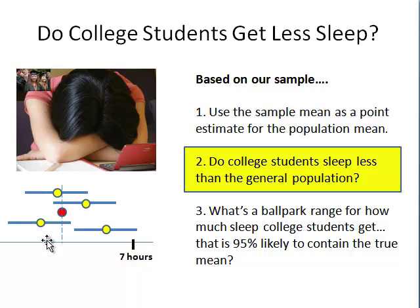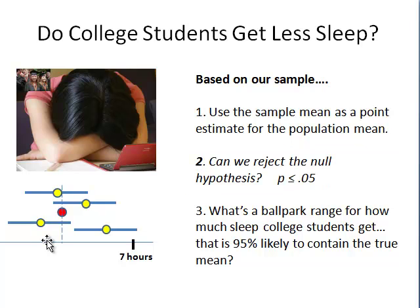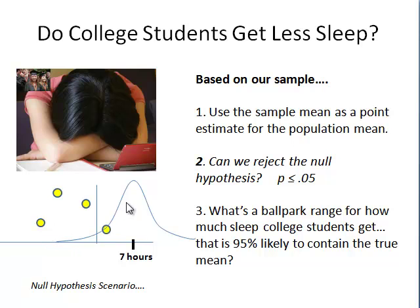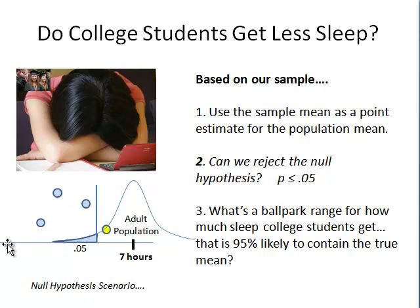Second, do college students sleep less than the general population? We're going to focus specifically on whether we can reject our null hypothesis. The null hypothesis is that college students are just like everybody else, needing seven hours or perhaps even more of sleep. We're looking at a distribution for the amount of sleep required by the adult population in the U.S., centered on seven hours. Looking at the left tail, because we're doing a one-tail hypothesis test, we can see our 0.05 shaded region — this will be our reject zone.